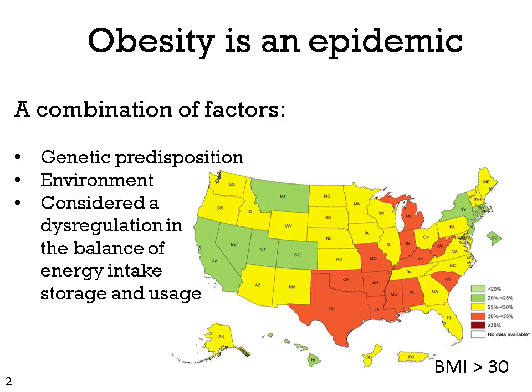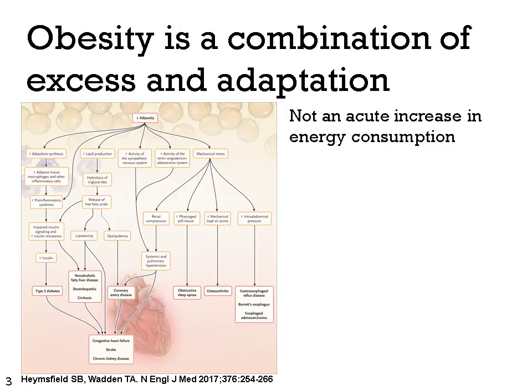As the map on the bottom right shows us, obesity has become an epidemic. Obesity is a combination of factors both genetic and environmental, and it can be considered a dysregulation in the balance of energy intake, storage, and usage. Obesity is a combination of excess and subsequent adaptation — it is not an acute increase in energy consumption. Over time, excess carbohydrates, proteins, and lipids are stored in adipose depots.